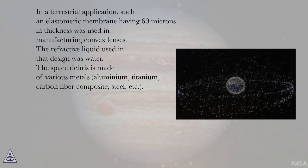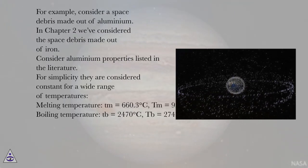The space debris is made of various metals: aluminum, titanium, carbon fiber composite, steel, etc. For example, consider a space debris made out of aluminum. In Chapter 2 we've considered the space debris made out of iron. Consider aluminum properties listed in the literature. For simplicity they are considered constant for a wide range of temperatures.